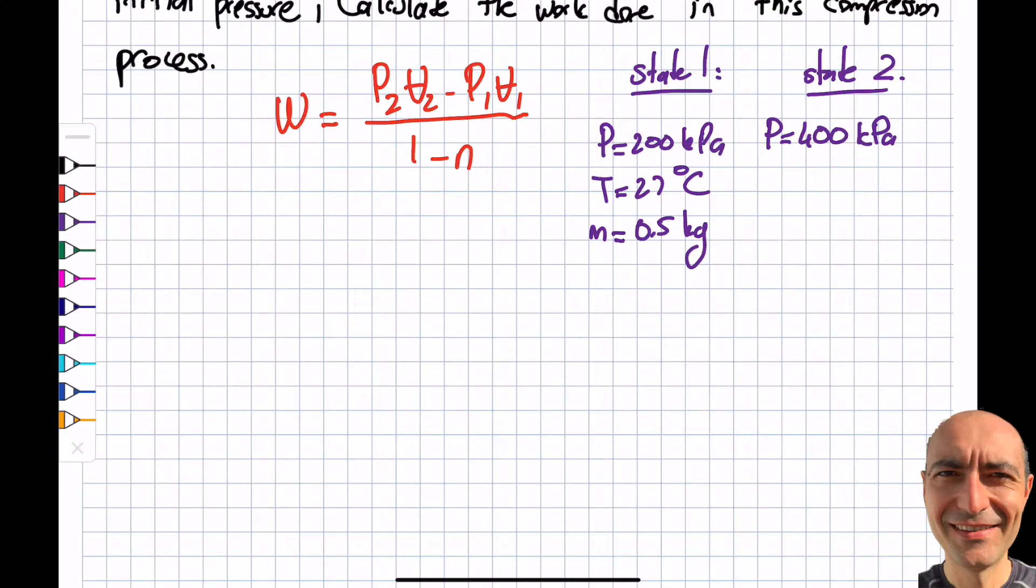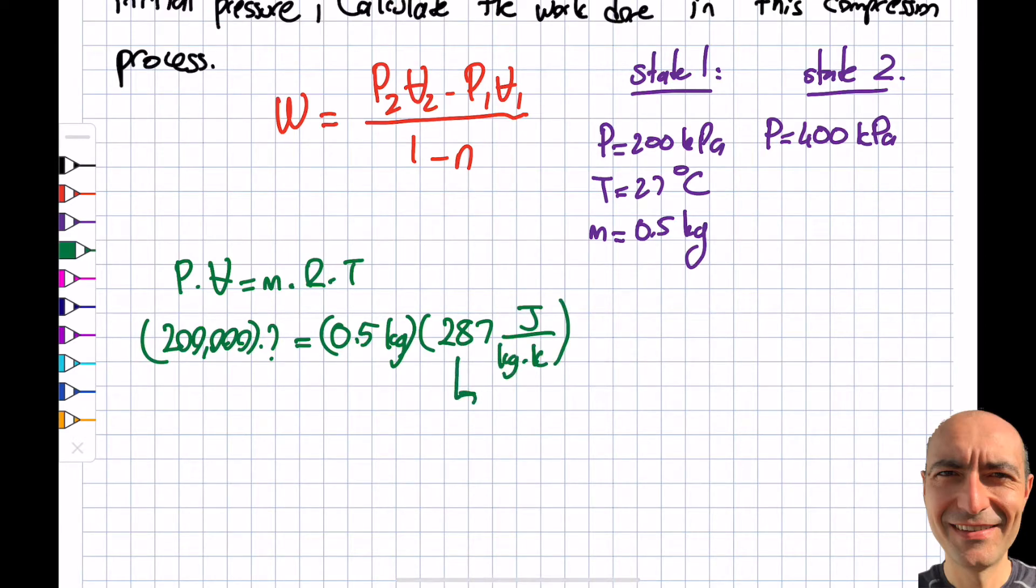Let's get to business and find the volume values. The first one is very similar to what I did before. PV = nRT. P is 200,000, volume is what I'm after, equals M is 0.5 kilograms, R equals 287 joules per kilogram Kelvin. I know this from table A1, Cengel 9th edition, your textbook, times the temperature 300 Kelvin. When I punch into my calculator, I get my V1 is 0.215 meter cubed.